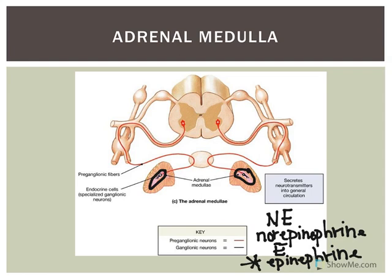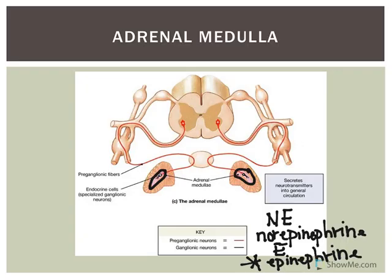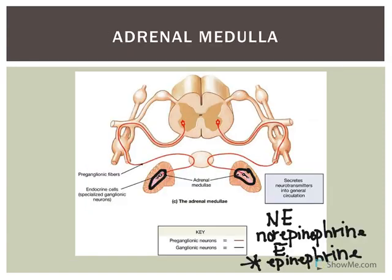Norepinephrine and epinephrine have very similar effects, but in this case these are actually hormones. They will travel in your bloodstream and their effects are going to be much more widespread than direct innervation by a nerve fiber. The response can be excitatory or inhibitory, depending on the specific receptor located in that target organ.